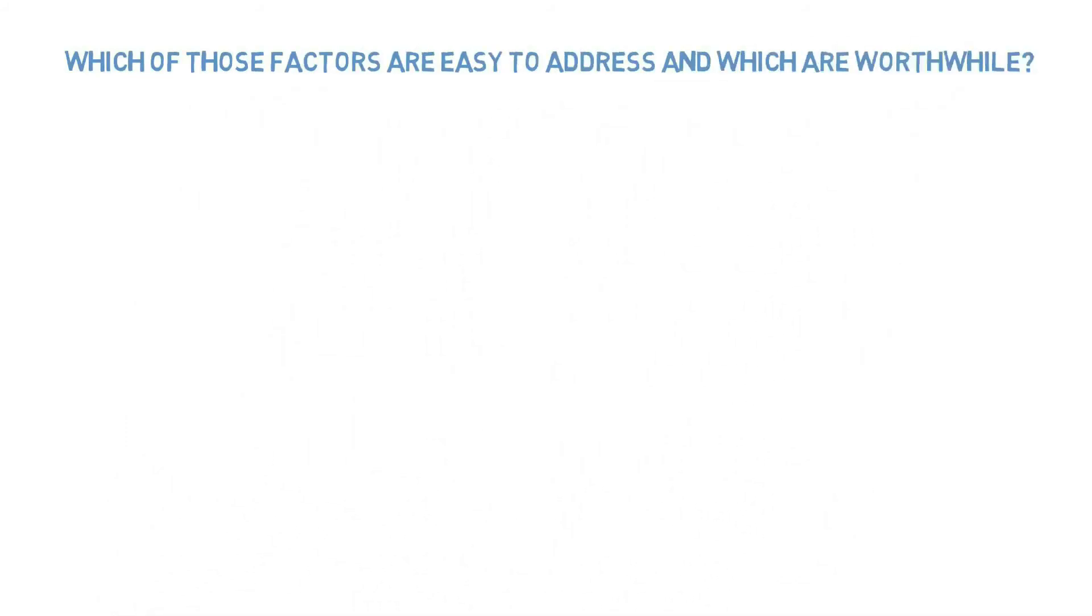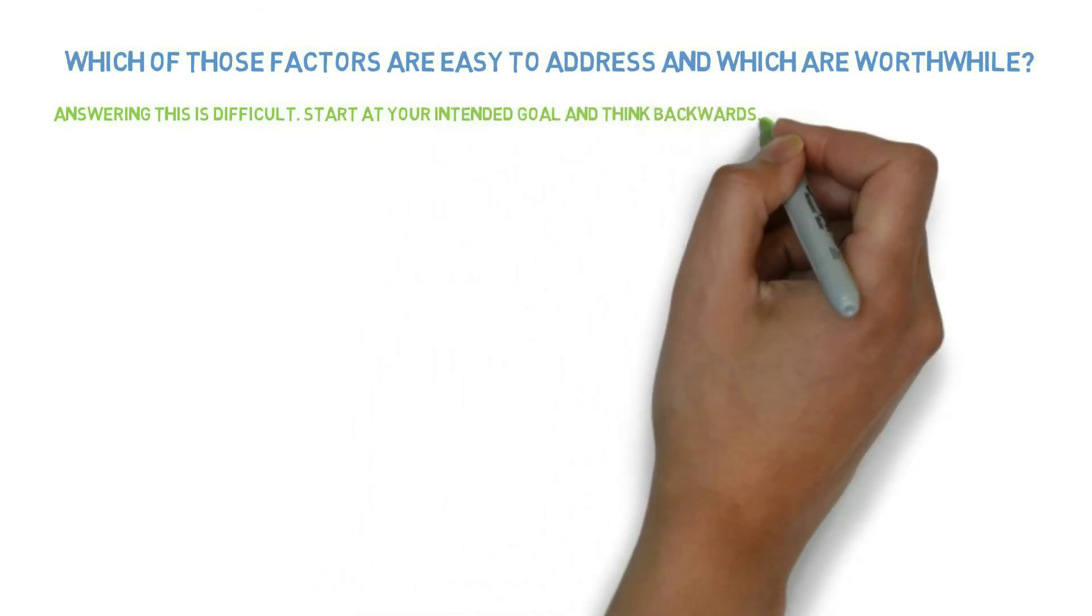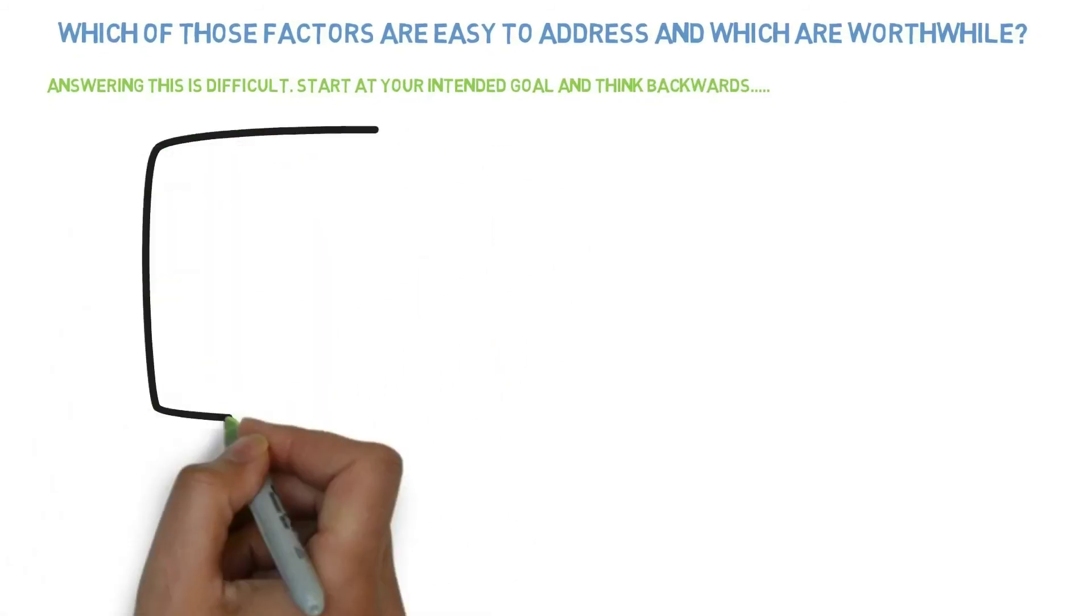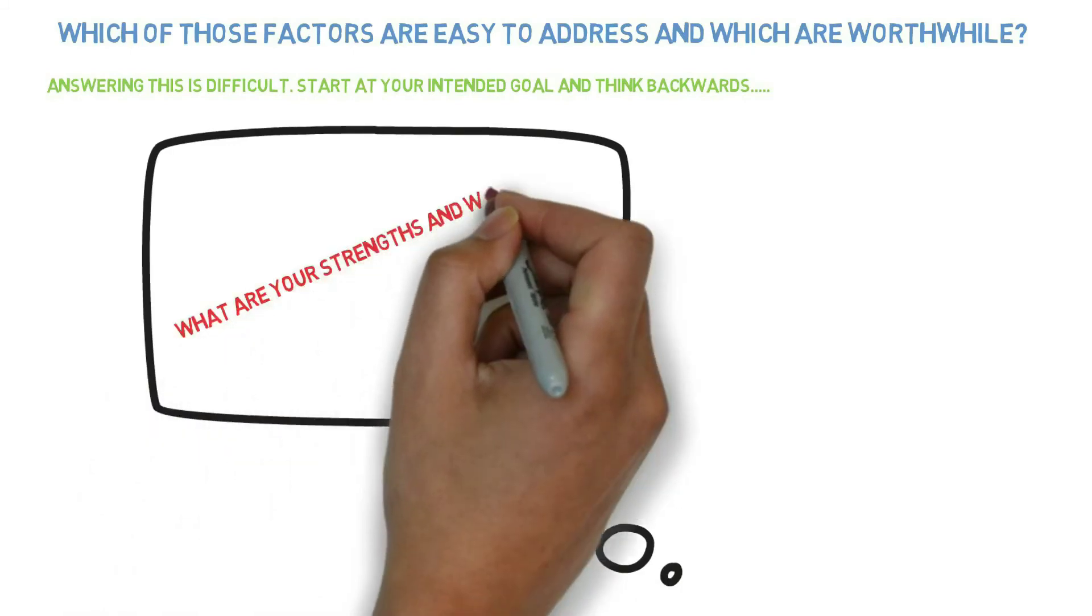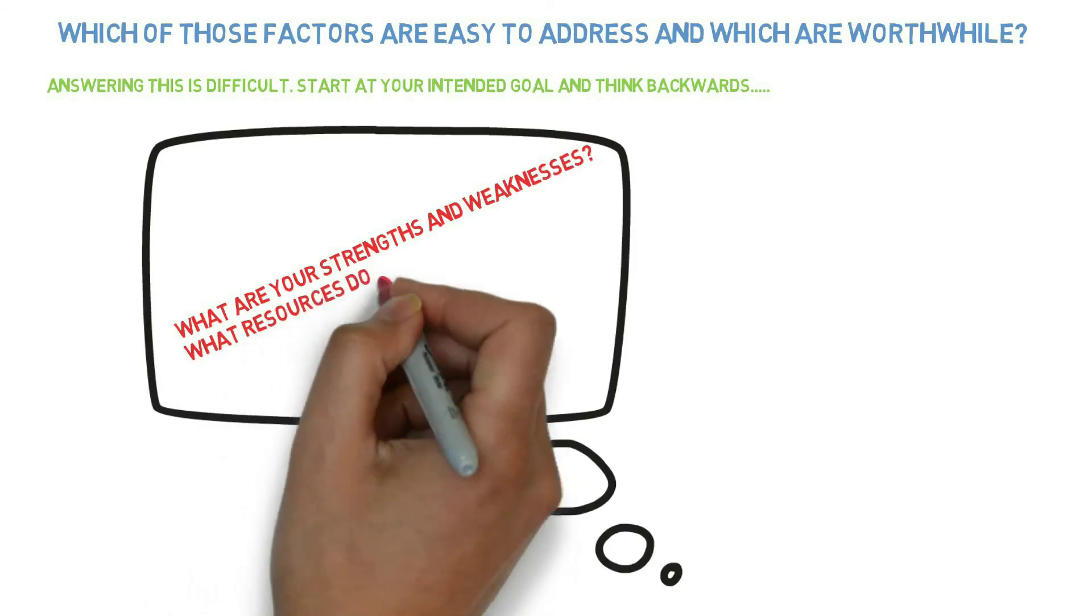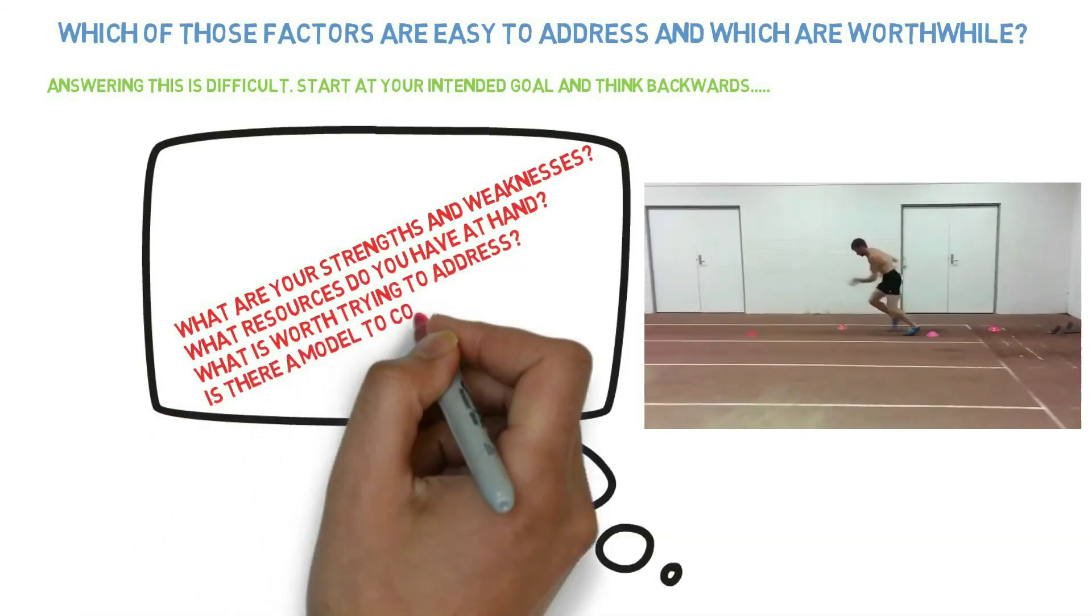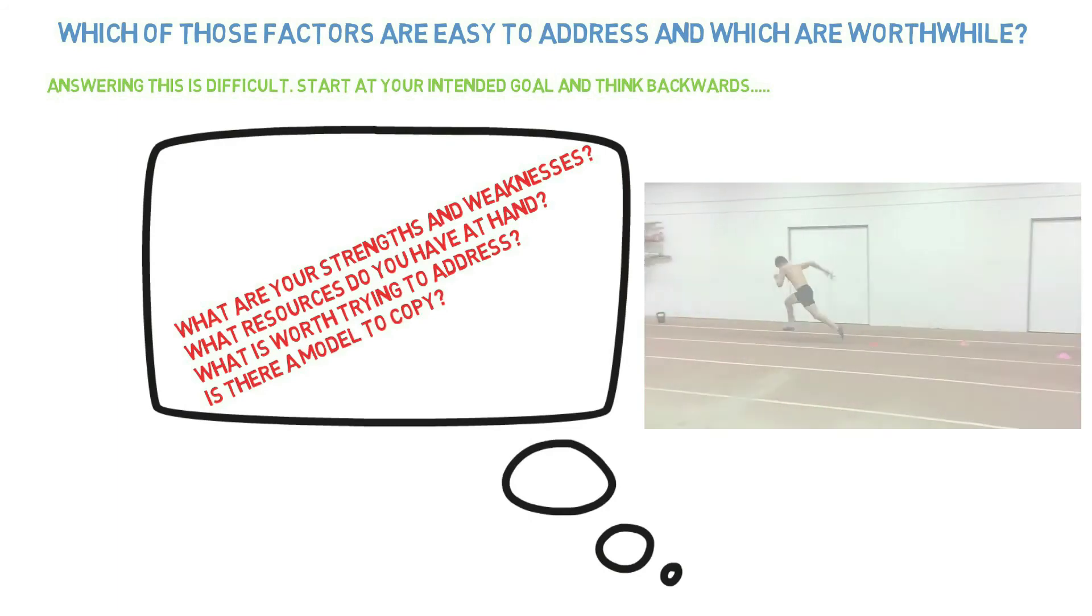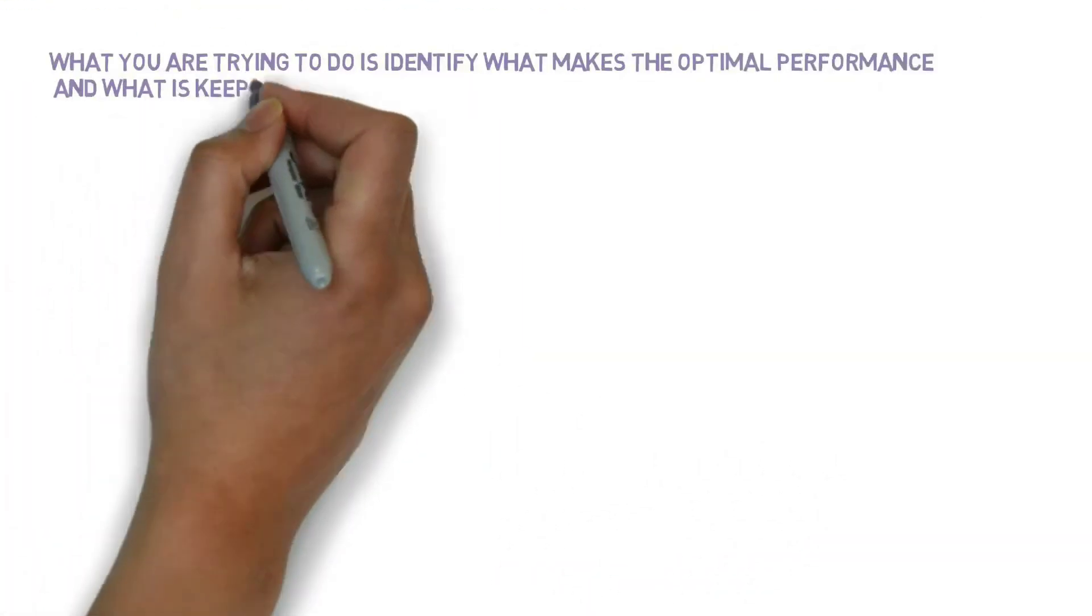Deciding which of those factors are easy to address and which are worthwhile is difficult to do. One good way is to think of your intended goal or outcome and work backwards from that. So you might think about what are your strengths and weaknesses? What resources do you have at hand? What is worthwhile trying to address and what is pointless? And is there a model to copy from a coach or expert performer that has come before you?